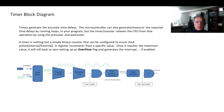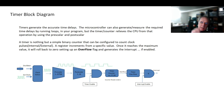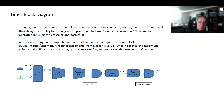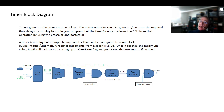A timer isn't anything special — it's just a binary counter that can be configured. We're going to look at one that counts from zero to 255 and another that counts from zero to 65,535. They just keep counting; every time the clock oscillates it counts up, and once it reaches a value it overflows and generates an interrupt if enabled — but today we're just going to check the flag.